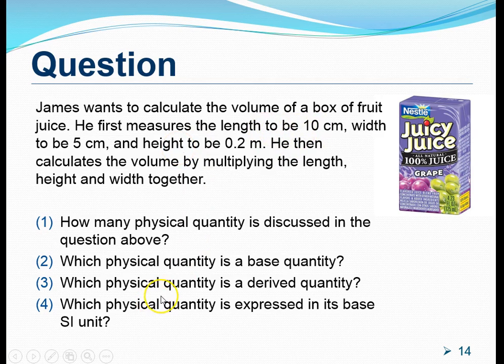For question number 3. Which is a derived quantity? The derived quantity is none other than the volume itself. And finally, which physical quantity is expressed in its base SI unit? Out of the 3 numerical magnitude and unit given, only the height is expressed in the unit meters. And if you recall, the SI unit, the base SI unit of length is actually in meters. Therefore, height in this particular problem is the physical quantity expressed in its base SI unit.